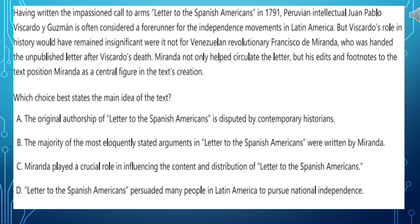Before we start reading the text, please pay attention to the first and to the last sentences. Having written the impassioned call to arms letter to the Spanish Americans in 1791, Peruvian intellectual Juan Pablo Viscardo Guzman is often considered a forerunner for the independence movements in Latin America. But Viscardo's role in history would have remained insignificant were it not for the French Revolutionary Francisco de Miranda, who was handed the unpublished letter after Viscardo's death. Miranda not only helped circulate the letter, but his edits and footnotes to the text positioned Miranda as a central figure in the text creation.